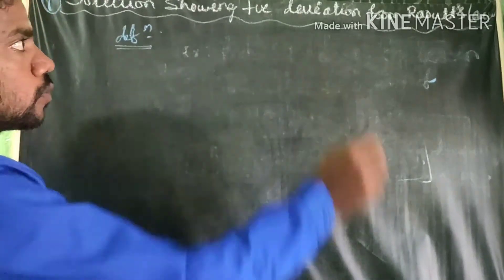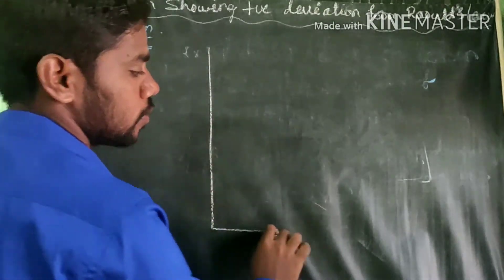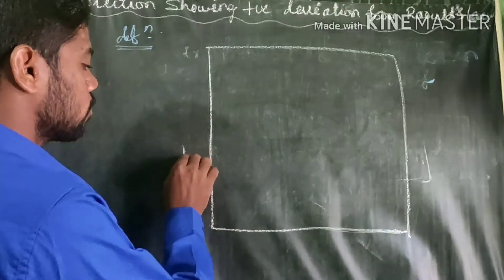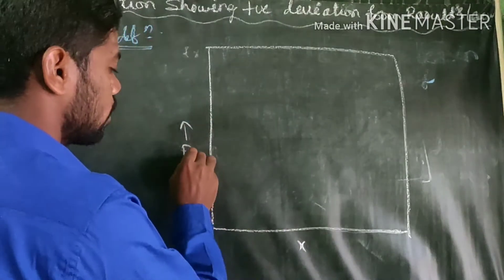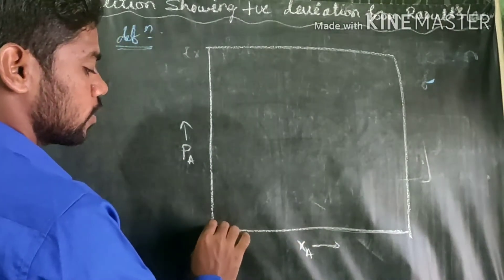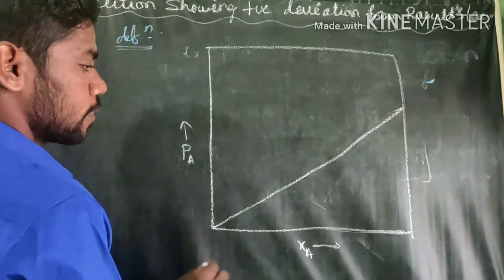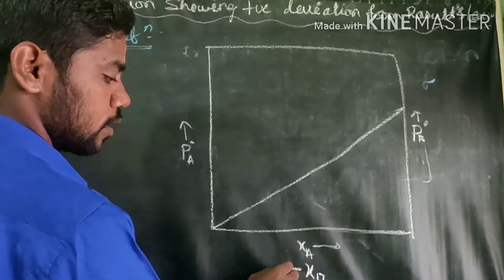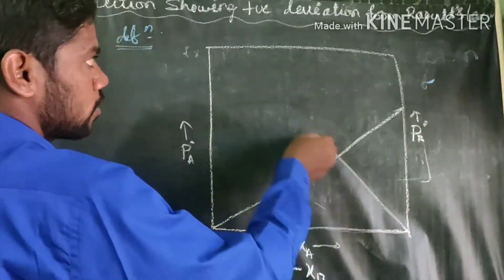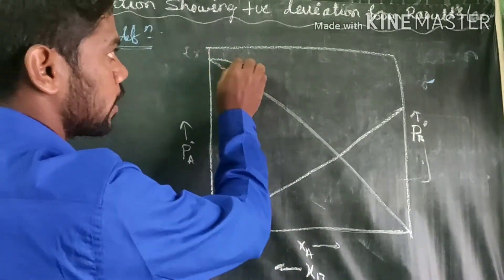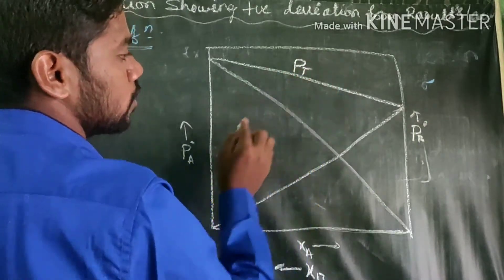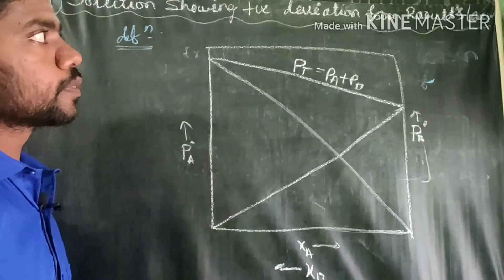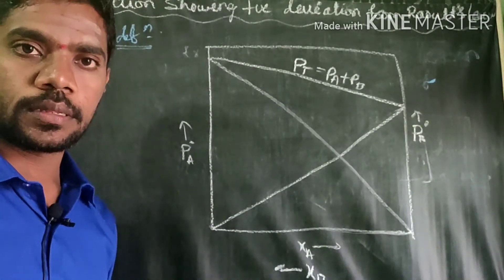We have to show this positive deviation on a graph. If I have two types of solution, this is the vapor pressure of one solution plotted against the mole fraction. This gives the graph from the origin — that is the ideal solution line. The vapor pressure of the second solution gives another line, and the total pressure is the sum of PA plus PB.